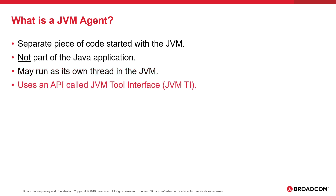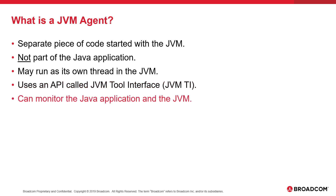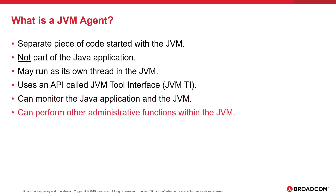The Agent can interface with the JVM through an API called the JVM Tool Interface, also known as JVMTI. The Agent has visibility into the JVM and the application the JVM is running. Thus, the Agent can monitor things like storage usage or thread performance, among several other things.